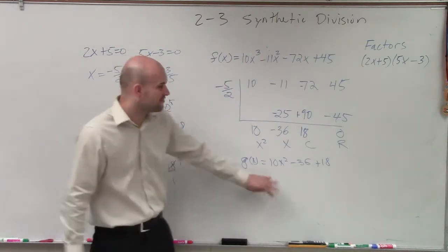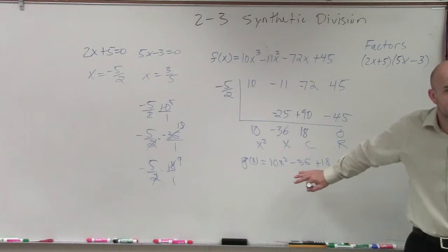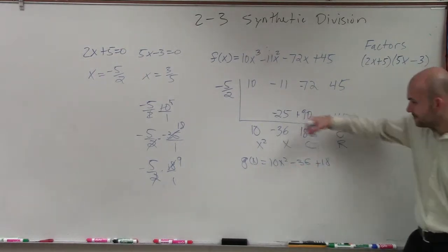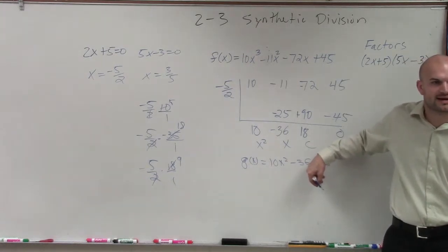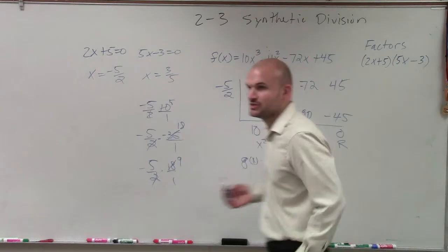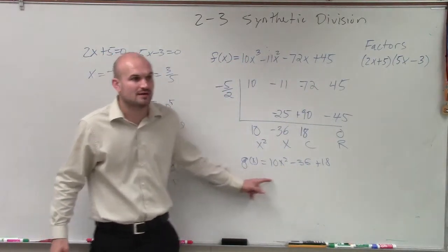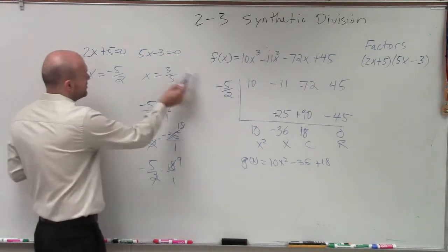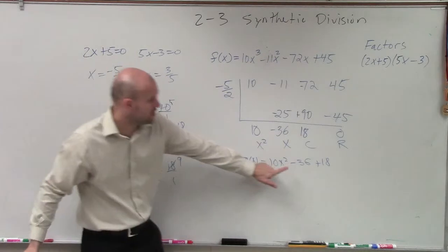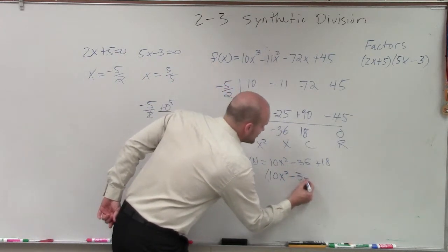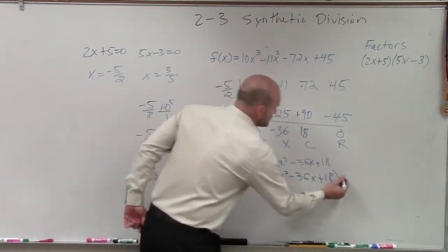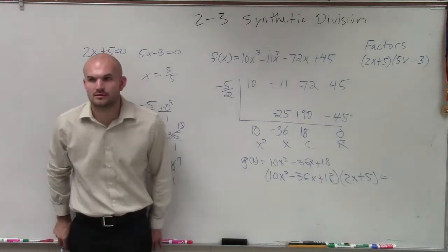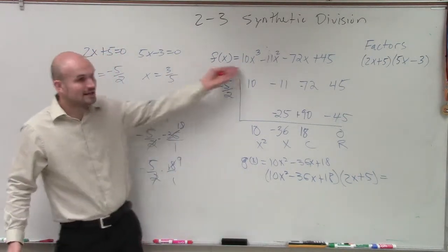Now, however, ladies and gentlemen, you need to understand from this division, what do we know about our answer? We know our remainder is 0. But if I take my quotient and multiply it by what, what am I going to get? If I multiply this by my d of x, which was this one, 2x plus 5, if I take 10x squared minus 36x plus 18 and multiply that by 2x plus 5, what is that going to equal? F of x, my original polynomial.